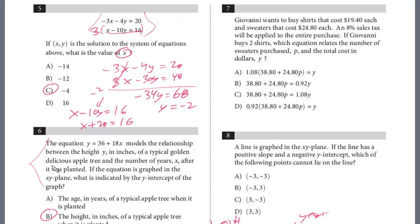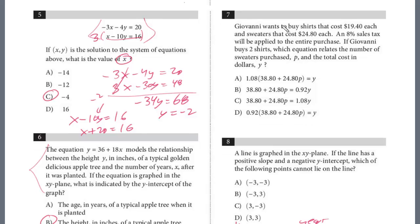Let's take a look at 7. Giovanni wants to buy shirts that cost $19.40 each and sweaters that cost $24.80 each. An 8% sales tax will be applied to the entire purchase. If Giovanni buys two shirts, which equation relates the number of sweaters purchased p and the total cost y? We don't have to solve it, we just have to set this up. Now we're told he buys, we have the number of shirts he buys, two. Each shirt is $19.40, so we can figure out right away. We can just multiply this by two and we know that is $38.80. So this is the shirts.